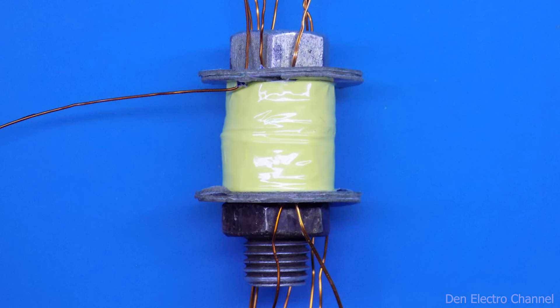At the top, near the end where we finished winding half of the primary winding, we insert another wire and wrap it to the left.